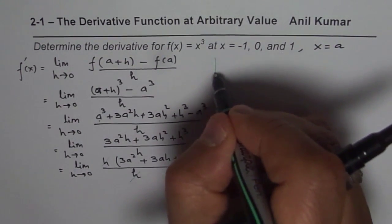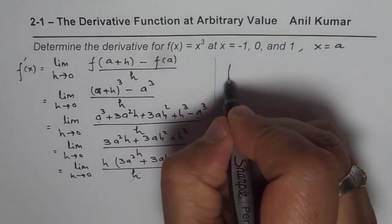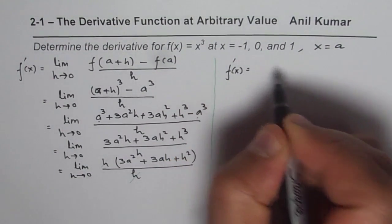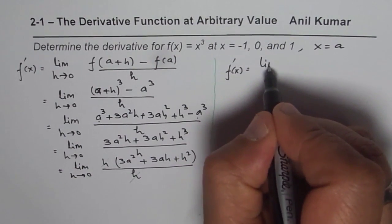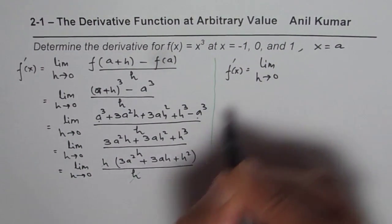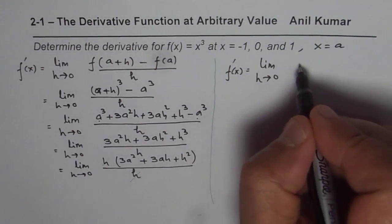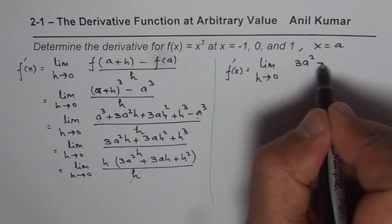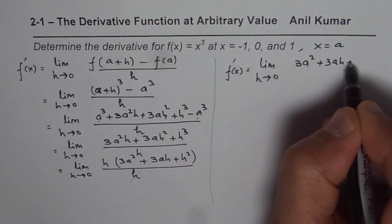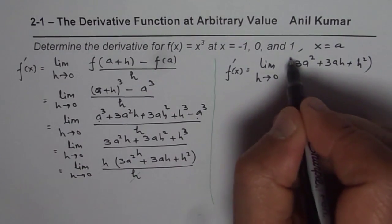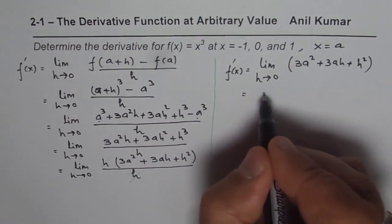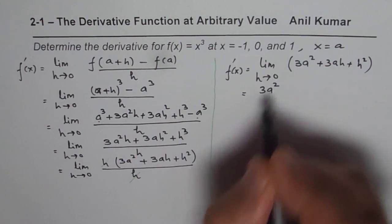And let's continue. So we get f'(a) = lim as h→0 of 3a² + 3ah + h². Now you substitute h = 0. Then you get 3a².